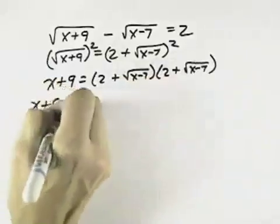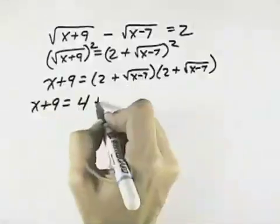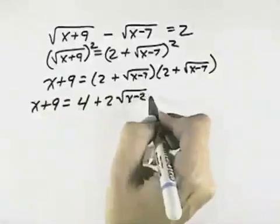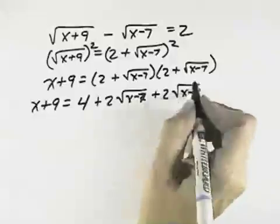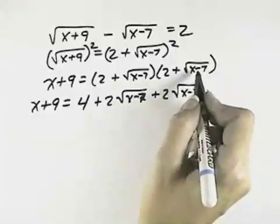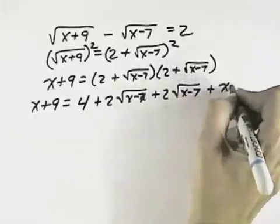I'll have x plus 9 on the left. On the right, I'll have 2 times 2 is 4, and then I'll have plus 2 times the square root of x minus 7, plus another 2 times the square root of x minus 7, and then x minus 7 times x minus 7, both under the square root signs, cancel the square roots leaving just x minus 7.